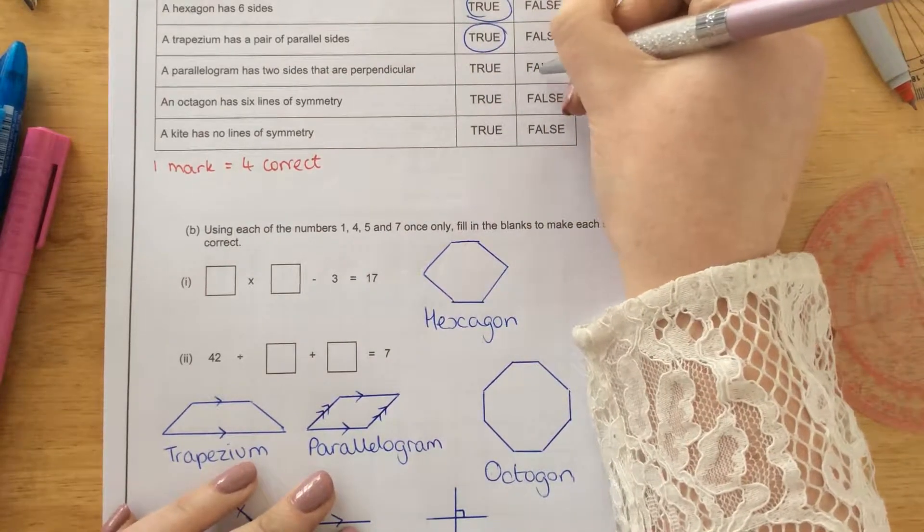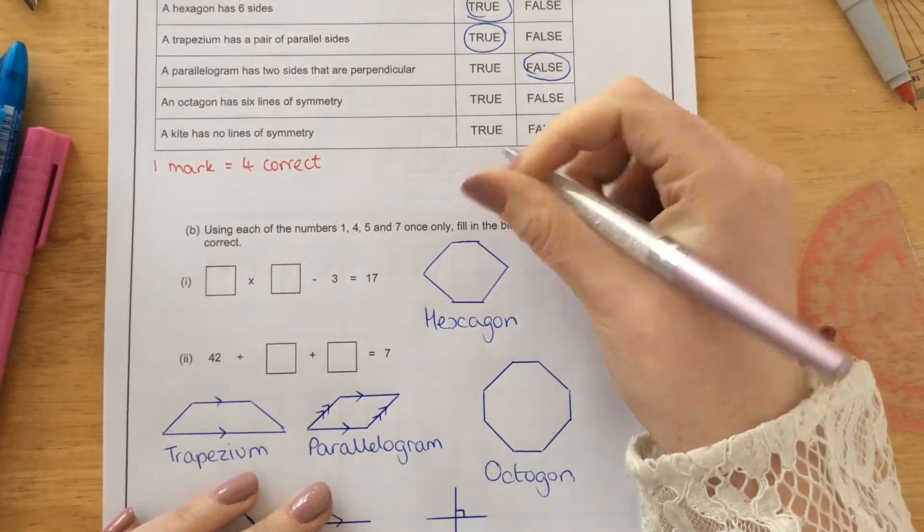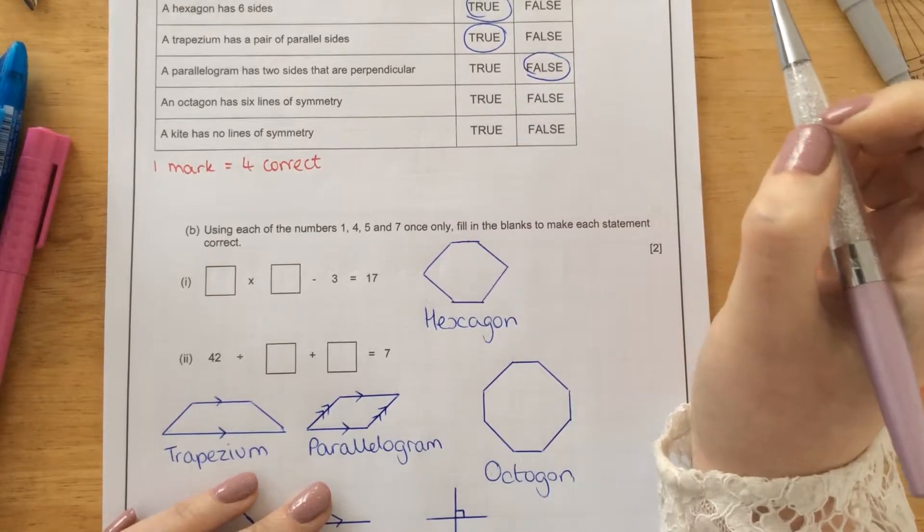Parallelogram. No sides meet at a right angle. An octagon has six lines of symmetry.